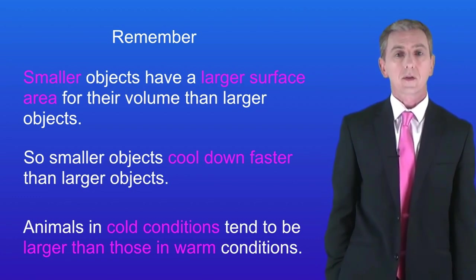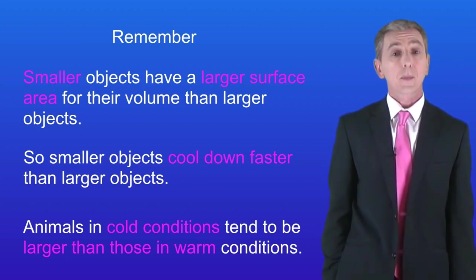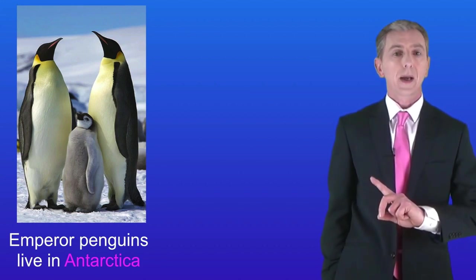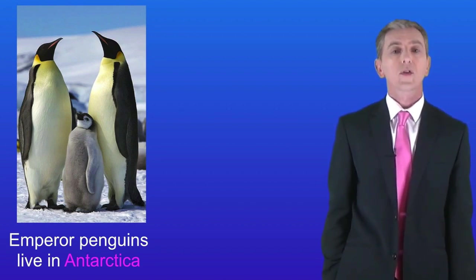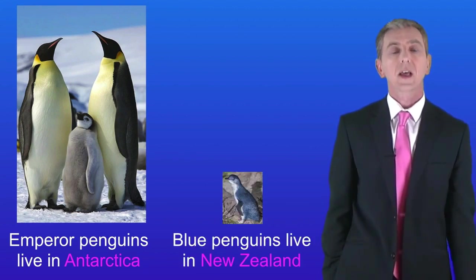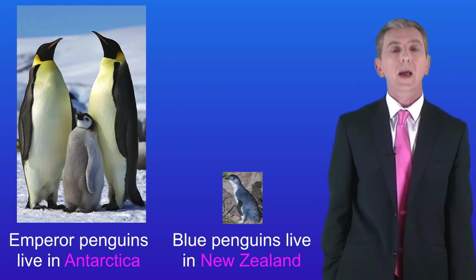Now we can actually see this with animals. Animals in cold conditions tend to be larger than those in warm conditions and a good example is penguins. We find emperor penguins in Antarctica where it gets extremely cold, and emperor penguins are really large — the adult penguins are over a metre tall. For their volume these penguins have a relatively small surface area so they can keep warm. To compare, blue penguins are only about 30 centimetres tall and we find these in warm conditions in Australia and New Zealand. Because they're small, blue penguins have quite a large surface area for their volume so they're going to lose quite a lot of heat, but it's not a problem as they live in warm conditions.